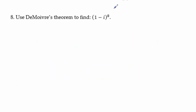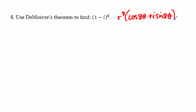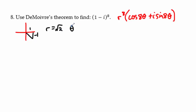Problem 8 uses De Moivre's theorem, which is as easy to memorize as the product and quotient rules. You raise r to the power and multiply the angle by that power. For (1 − i)⁸: graphing 1 and −i, we get a special right triangle with radius √2 and angle 7π/4.